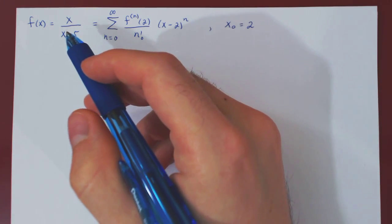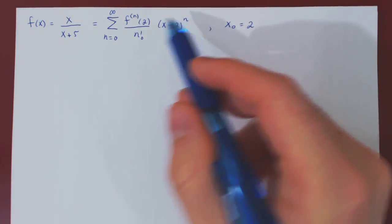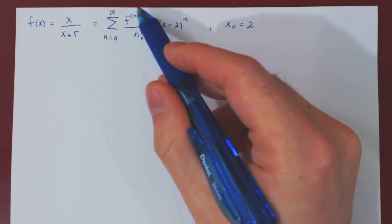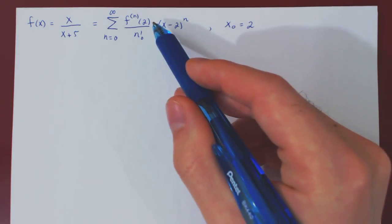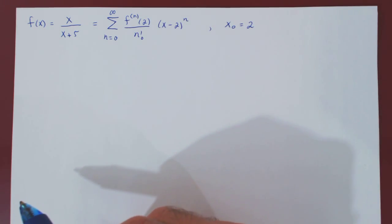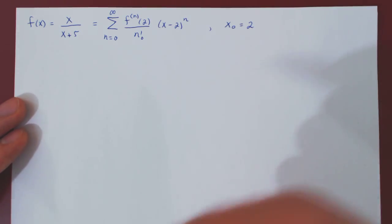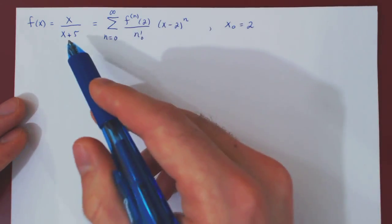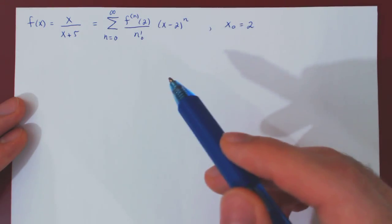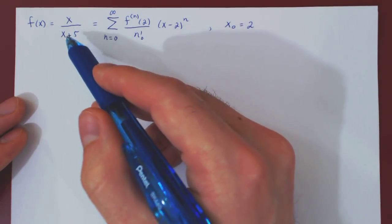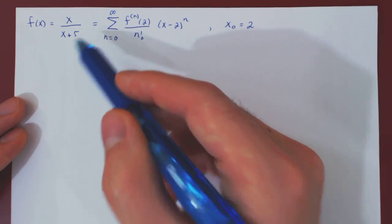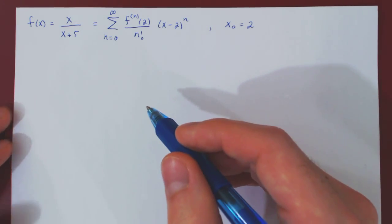So if you recall in the previous video, we found the Taylor series of the function x over x plus 5 centered at 2 by finding a pattern for the higher derivatives of the function at 2 and then replacing into the Taylor series expansion. Now we want to find the exact same Taylor series, but instead of finding a pattern for the higher derivatives, we will instead use our knowledge of geometric series to turn this function x over x plus 5 into something of the type 1 over 1 minus r.